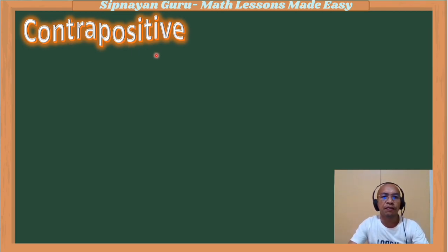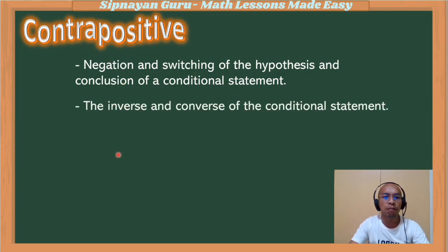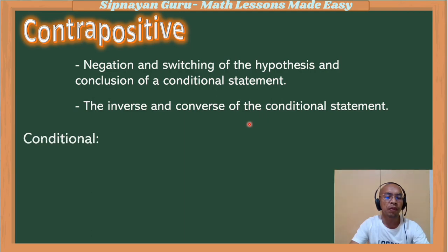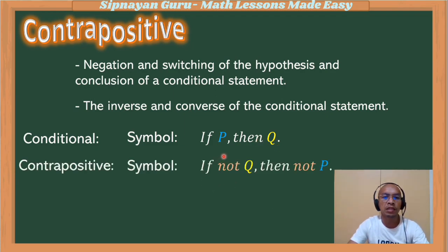What is contrapositive? The contrapositive is the negation and switching of the hypothesis and conclusion of a conditional statement. Negation is the inverse; switching is the converse. That is why the contrapositive is the combination of inverse and converse of a conditional statement. So if our conditional statement is if P then Q, now its contrapositive is if not Q, then not P. We switch the conclusion to be the hypothesis and the hypothesis becomes the conclusion, and at the same time we negate both.